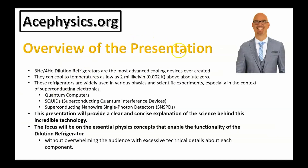Here's a brief overview of the presentation. Dilution refrigerators are the most advanced cooling devices ever created. They can cool to temperatures as low as 2 mK — that's 0.002 K above absolute zero. These refrigerators are widely used in various physics and scientific experiments, especially in the context of superconducting electronics.